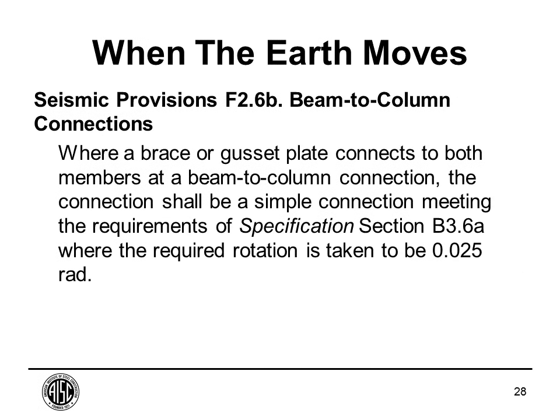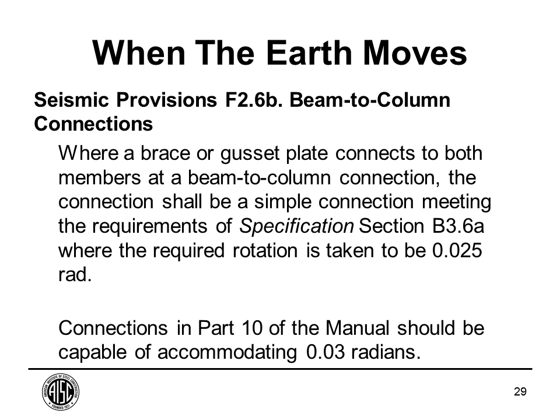A rotation requirement sometimes overlooked is in the seismic provisions, Section F2.6B. Due to inelastic response of the structure, large drifts of about 2.5% will cause large rotations, so connections must accommodate 0.025 radians. Unlike B3.6A where there's no fixed target rotation, the seismic provisions do set one. Standard shear connections checked per Part 9 of the manual will ensure capability of 0.03 radians, so they inherently satisfy the seismic 0.025-radian requirement.